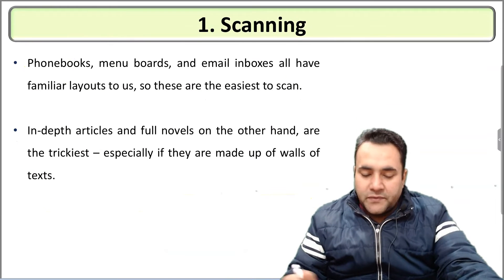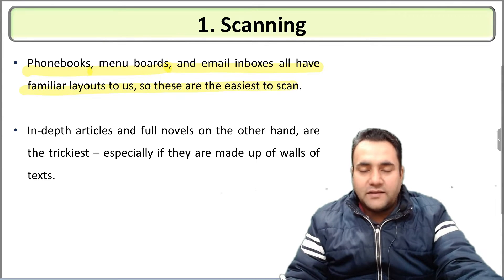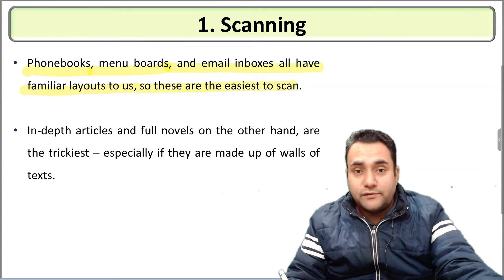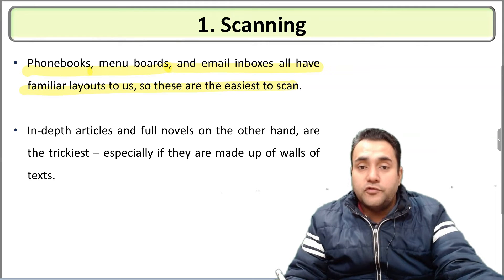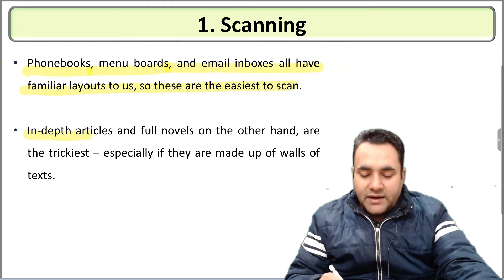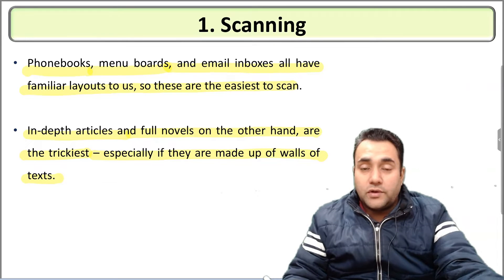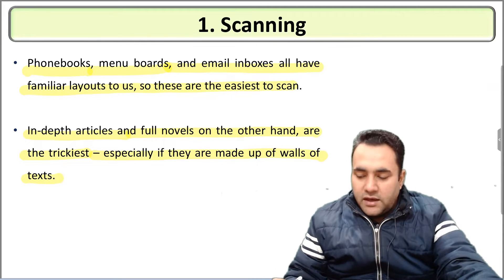Phone books, menu boards, and email inboxes are the easiest to scan because they have a familiar layout. For example, in your email inbox, with a lot of spam, you scan subject headings to find the mail related to a job opportunity. In-depth articles and full novels are the trickiest to scan, especially when made up of large blocks of text. Materials with a simpler layout are easier to scan.